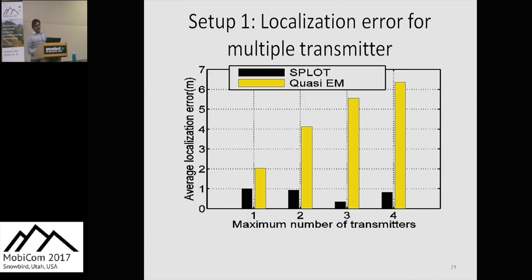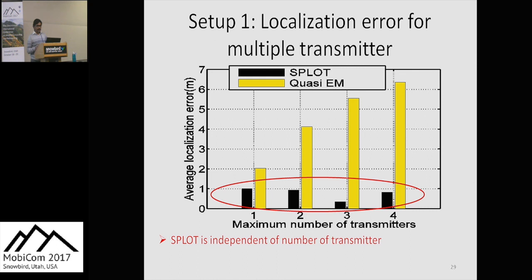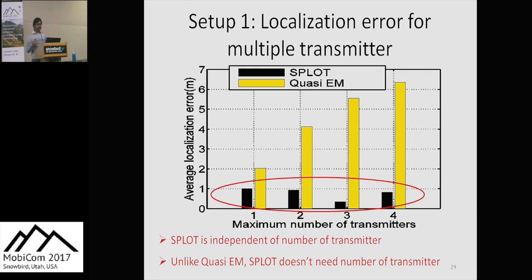For the multi-source localization results, the x-axis shows the number of transmitters to localize and y-axis shows localization error in meters. In setup one, the localization error is almost always less than one meter, and it doesn't depend significantly on the number of transmitters. The performance of SPLOT is significantly better than the quasi-EM algorithm. Notably, quasi-EM needs the number of transmitters as input, but SPLOT doesn't.